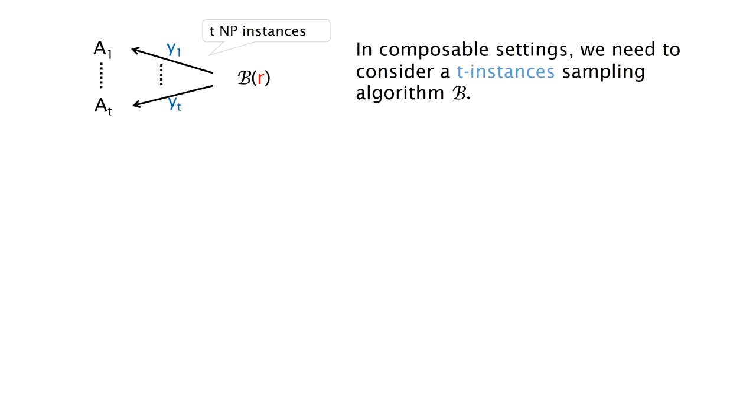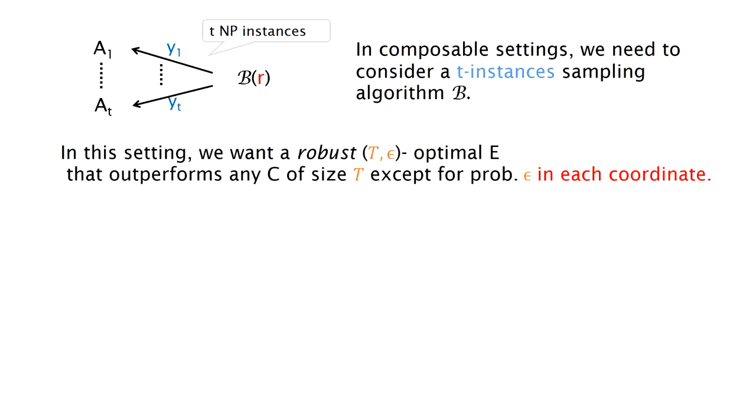And then for the purpose of our applications, we need to consider T-instance sampling algorithm B that outputs T instances simultaneously. For such a sampling algorithm B, we want a robust T-epsilon optimal extractor that outperforms any circuit C of size T except for probability epsilon in each coordinate. Here we also require this to hold even if the circuit C takes the output of the extractor as input.